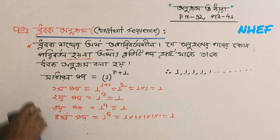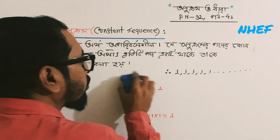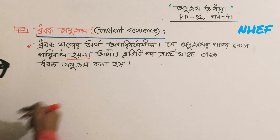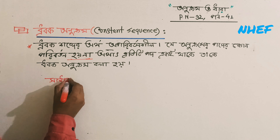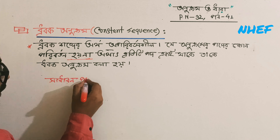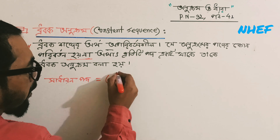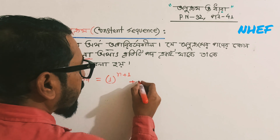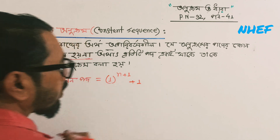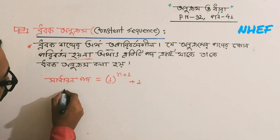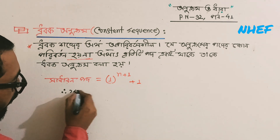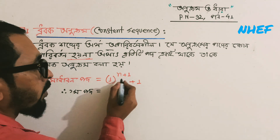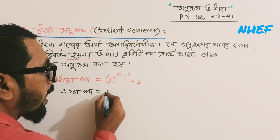Now, if you need to check: 1 to the power n plus 1 through it. 1 plus 1, 1 plus 1, 1 plus 1 equals 1 square. This is 1 square, 1 square.